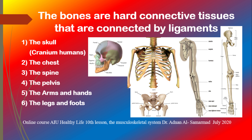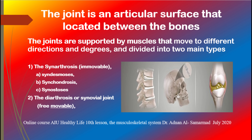The legs: the thigh has the femur and patella in the knee, and the lower leg has the tibia and fibula. The tibia is the stronger and tougher bone. The foot bones are ossa tarsalia, talus, calcaneus, ossa metatarsalia, and phalanges.